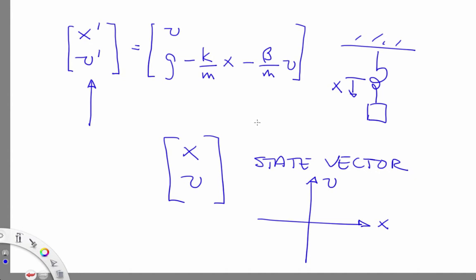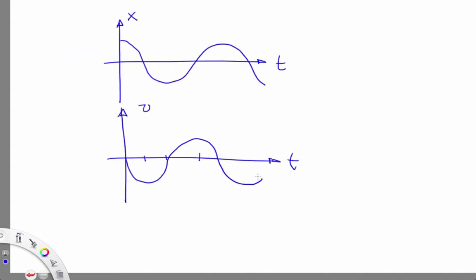You may recall that the solutions to this ODE system looked like this. That is, x was a cosine and v was a sine. That was for the situation where we pulled the mass out this far from its equilibrium position to start and then let it go.